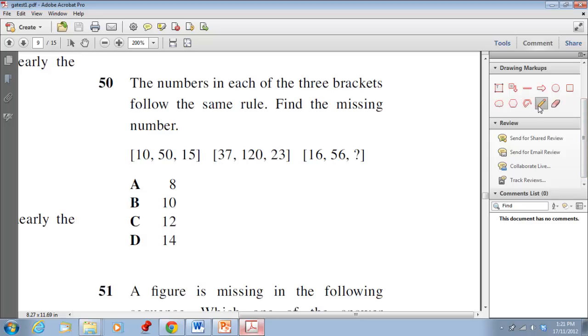So first thing first, I would read the question. So I know that three brackets here, each one of these three numbers follow a similar rule. So therefore you can apply whatever rule is in the first two to trying to find the last number here. Okay, how would you go about doing this?